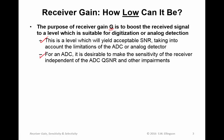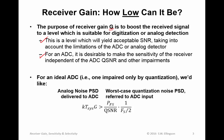For an ADC, it's desirable to make the sensitivity of the receiver independent of the ADC quantization signal-to-noise ratio and any other impairments. For an ideal ADC, one impaired only by quantization, we'd like the analog noise power spectral density delivered to the ADC to be greater than the worst-case quantization noise PSD referred to the ADC input.